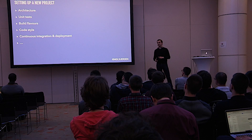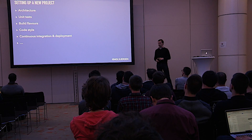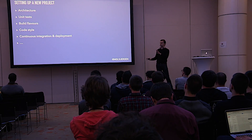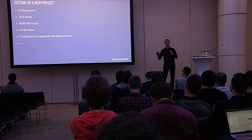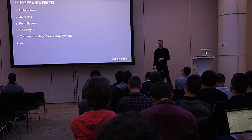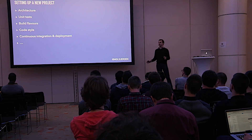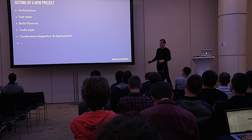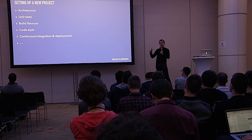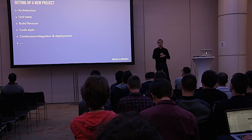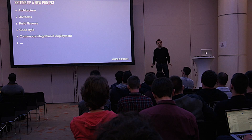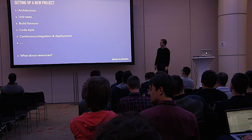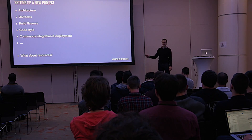Because whenever we start a new project, we think about what architecture we're going to use, which classes are going to have what responsibility, how we're going to separate our view logic from our UI logic, what the code style is going to be, what we're going to test, how we're going to test it, what CI. We ask ourselves tons of questions for every new project — but what about resources?